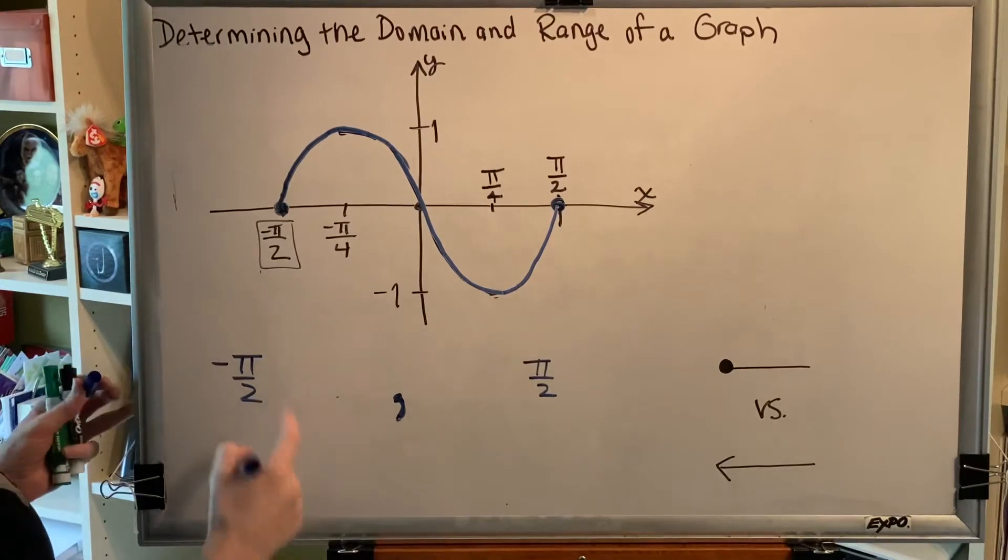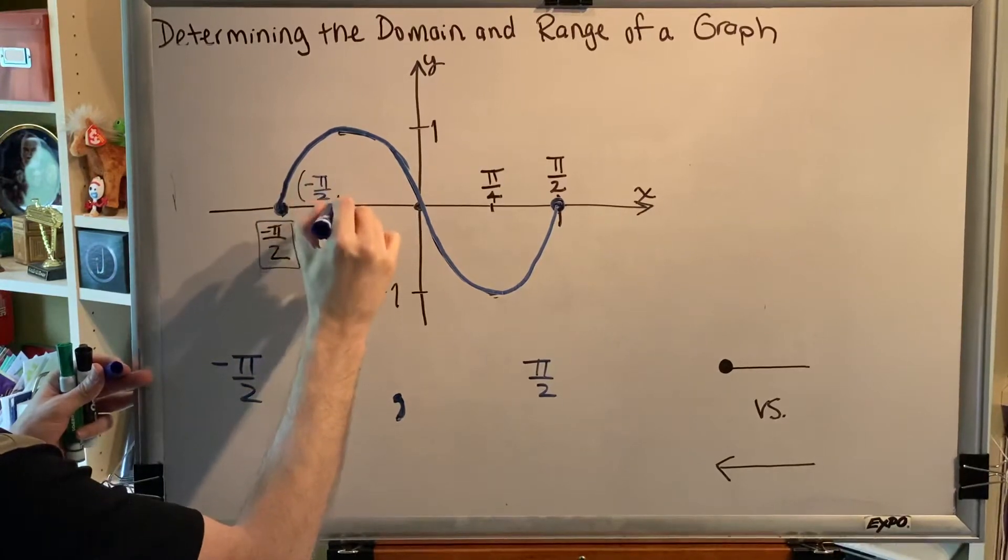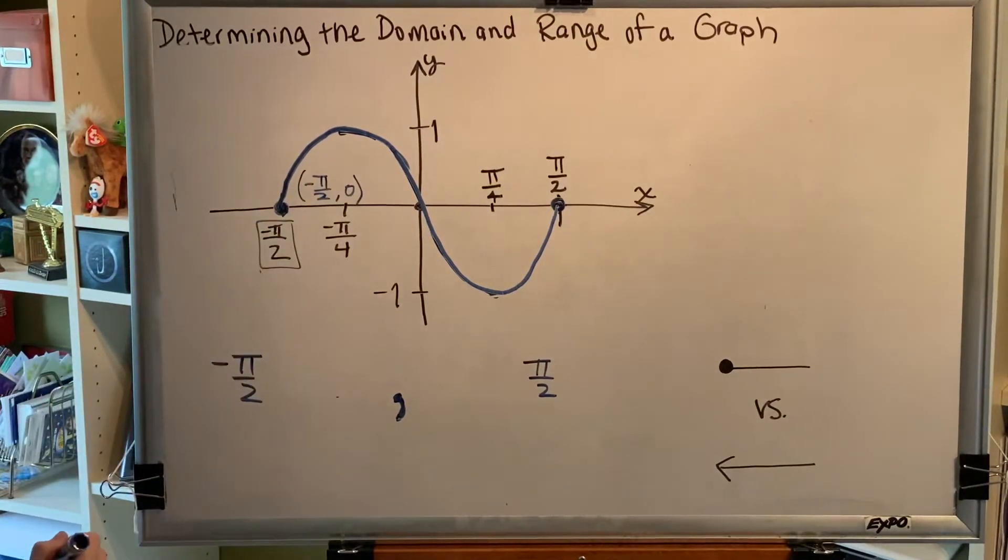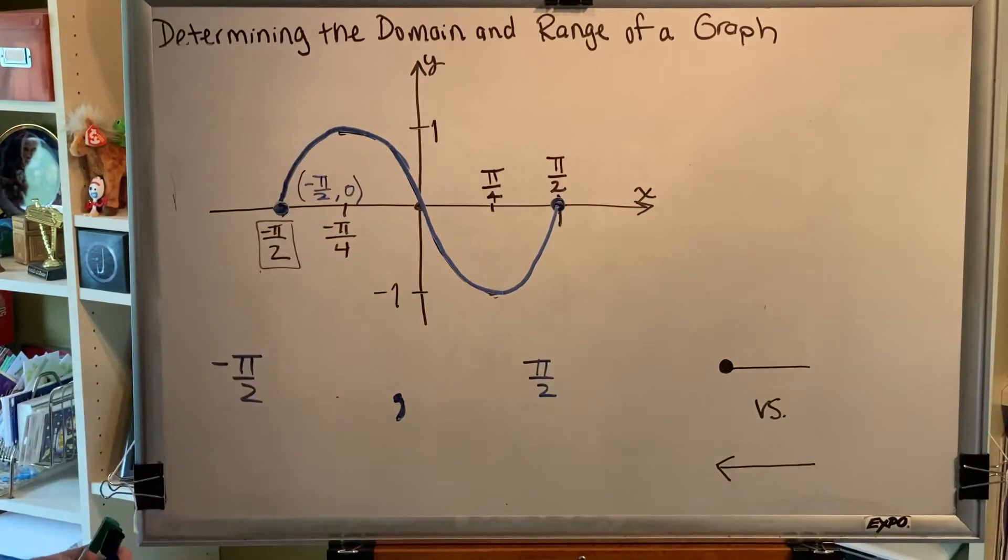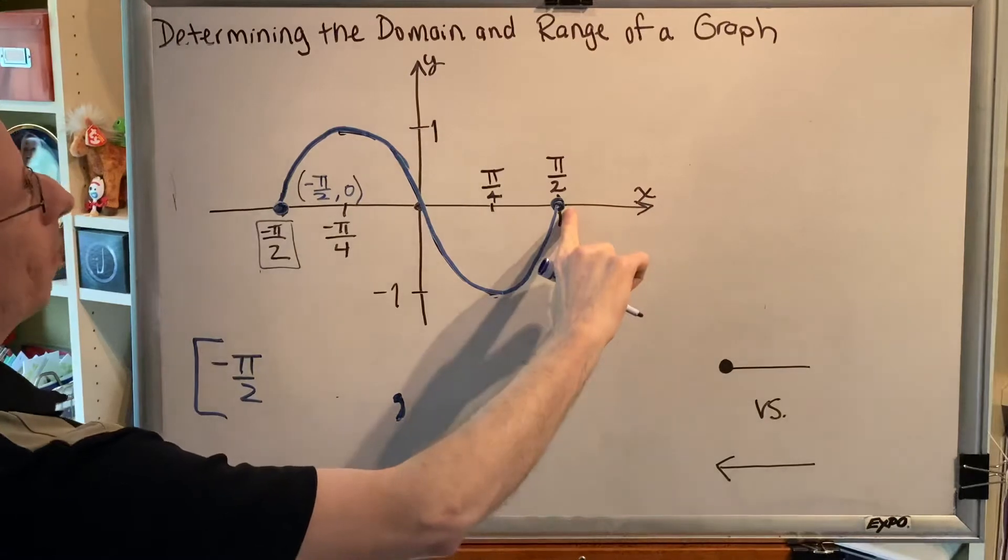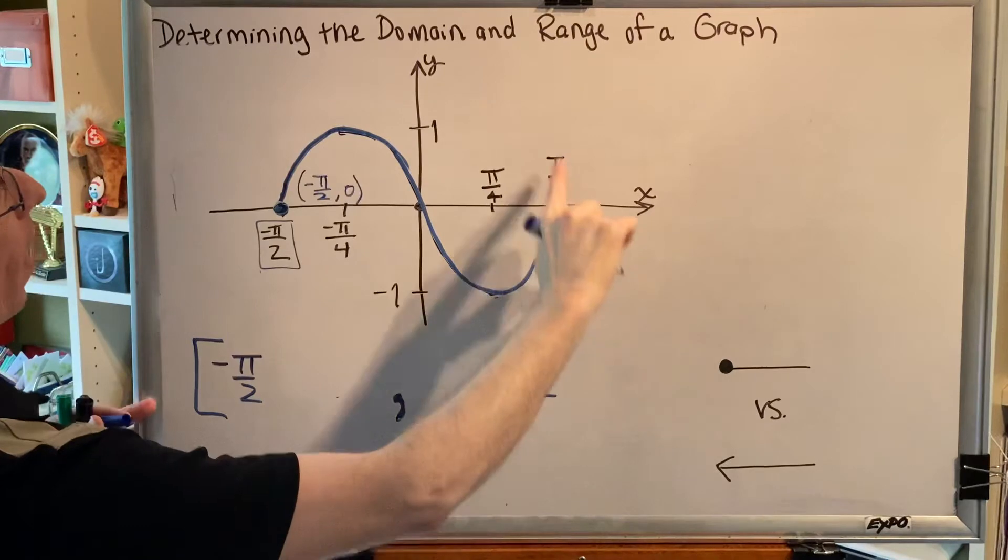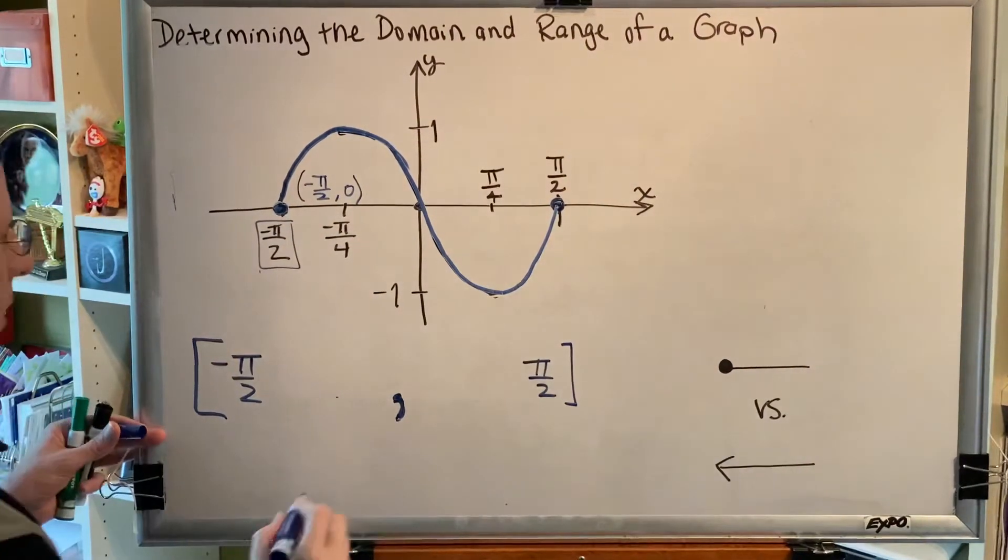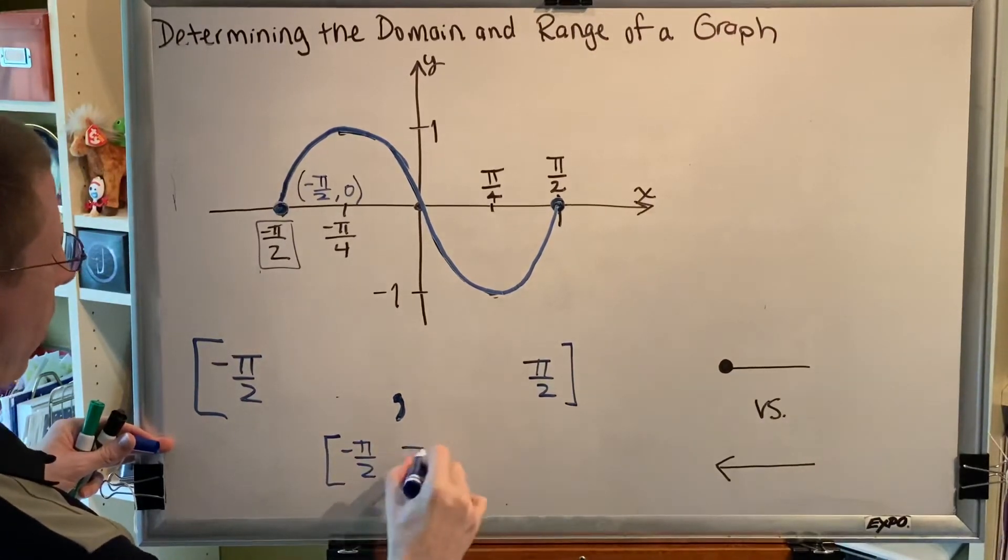Do we want to include the number negative pi over 2 in our domain? Well, let's think about what domain means. This point right here is the ordered pair negative pi over 2 comma 0. Now, domain is a collection of all of the x coordinates. This negative pi over 2 represents an x coordinate on our graph. Therefore, negative pi over 2 should be included in our domain. And the symbol we use to do that is a bracket. Using the same logic, this point, pi over 2 comma 0, has an x coordinate of pi over 2. Therefore, pi over 2 belongs in the domain. And I use a bracket. So my domain for this graph is negative pi over 2 comma pi over 2.